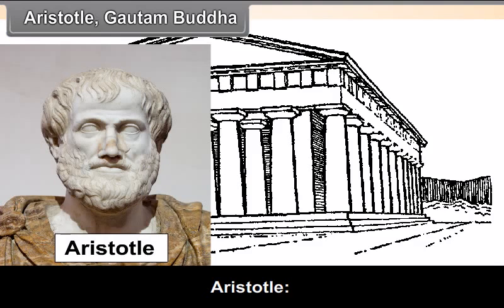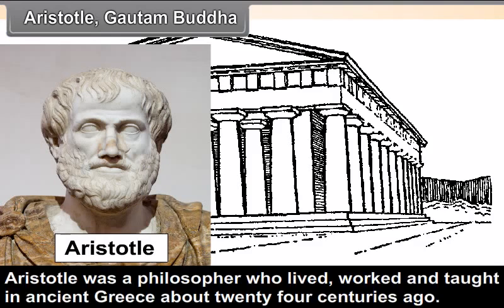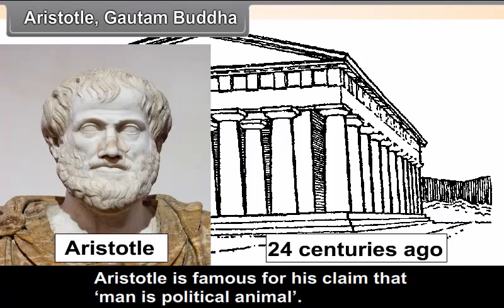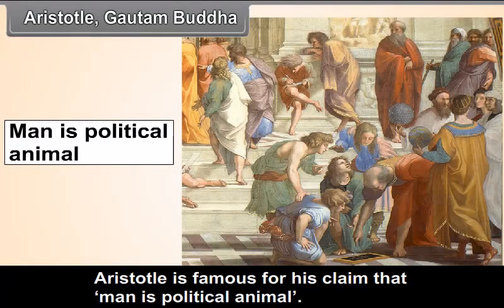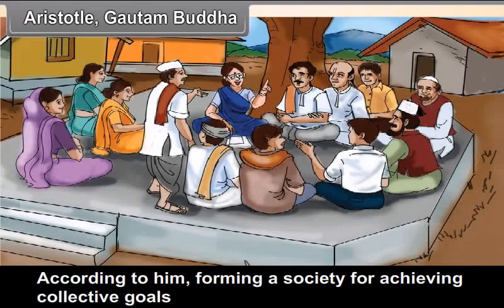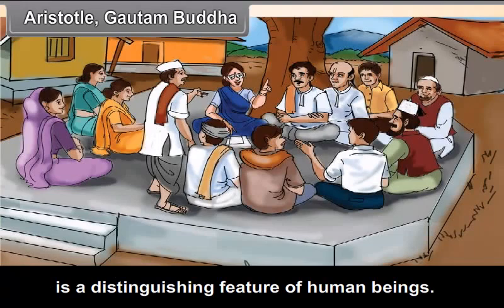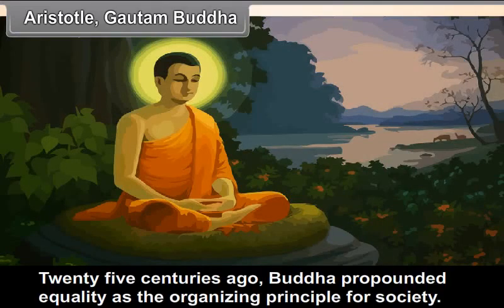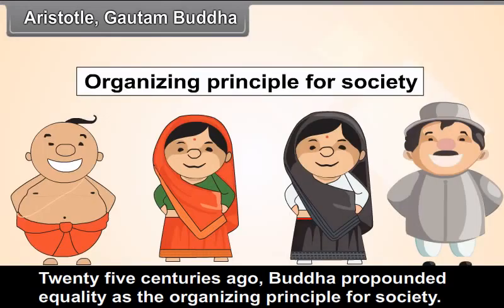Aristotle was a philosopher who lived, worked, and taught in ancient Greece about 24 centuries ago. He is famous for his claim that man is a political animal. According to him, forming a society for achieving collective goals is a distinguishing feature of human beings. About 25 centuries ago, Gautam Buddha propounded equality as the organizing principle for society.